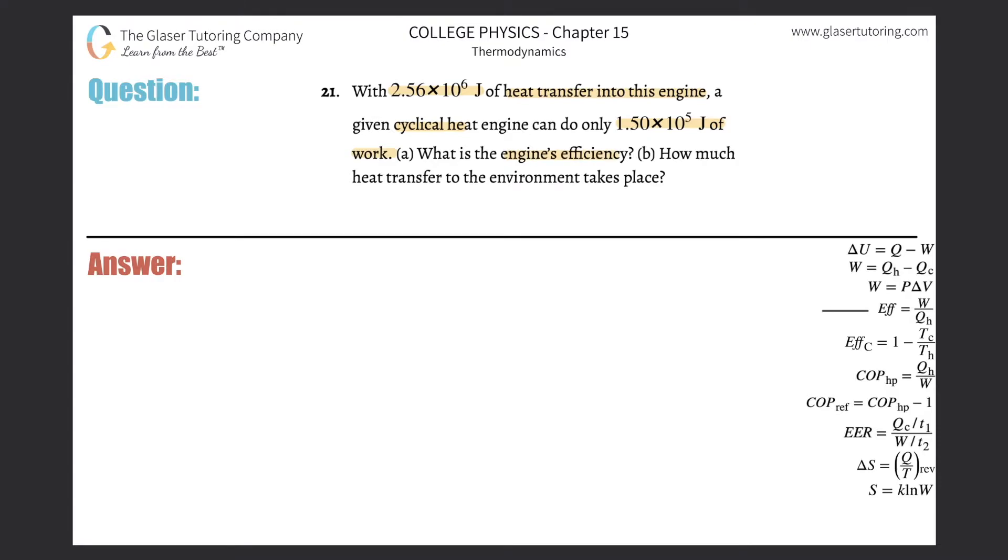Whenever you're talking about a cyclical engine and efficiency, it's the formula on the right-hand side. It tells us that the efficiency will be equal to the work done by the engine divided by the heat of the hot reservoir.